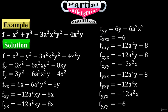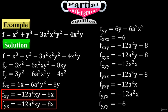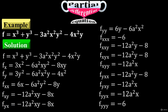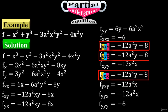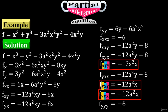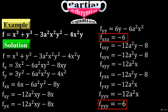Now notice that f sub xy equals f sub yx — they have similar values: minus 12a squared times xy minus 8x. In some cases you may also have similar values in the third order, as we have here. And that's all for the higher order partial differentiation.